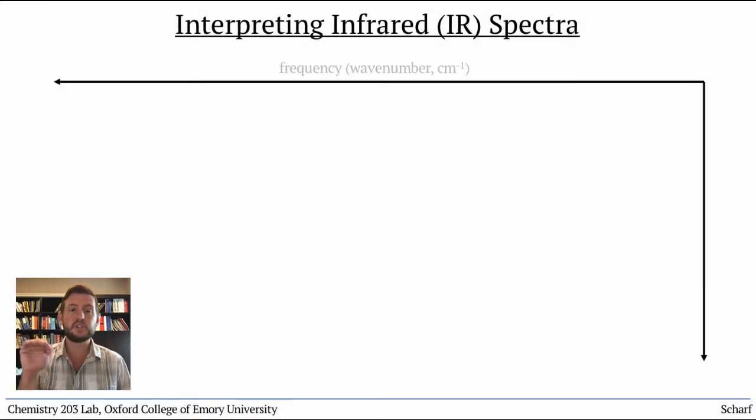The x-axis, which shows vibrational frequency in units called wavenumbers, or inverse centimeters, is at the top. And for unimportant historical reasons, it runs from low frequency on the right to high frequency on the left.